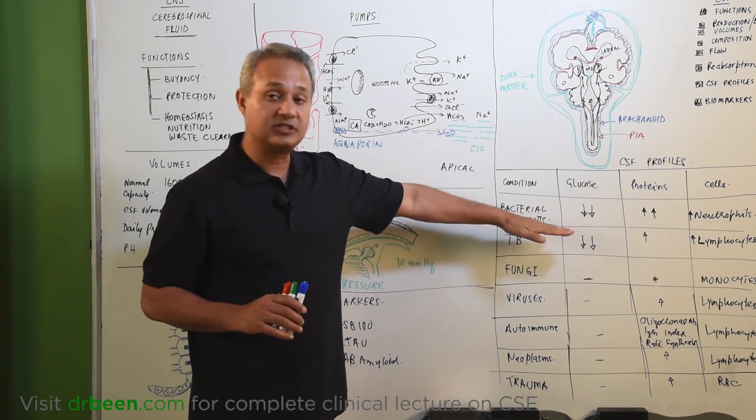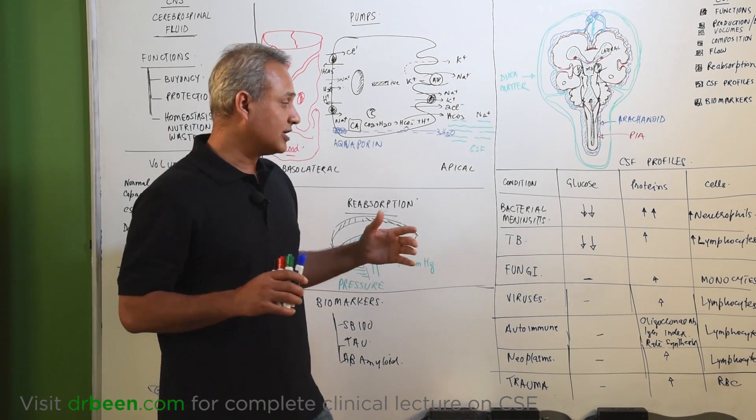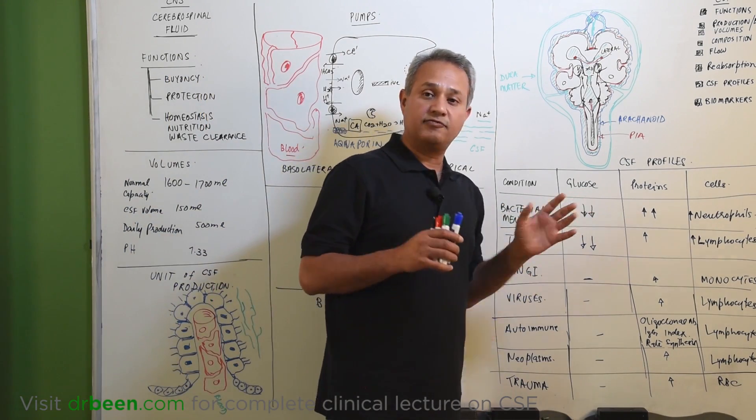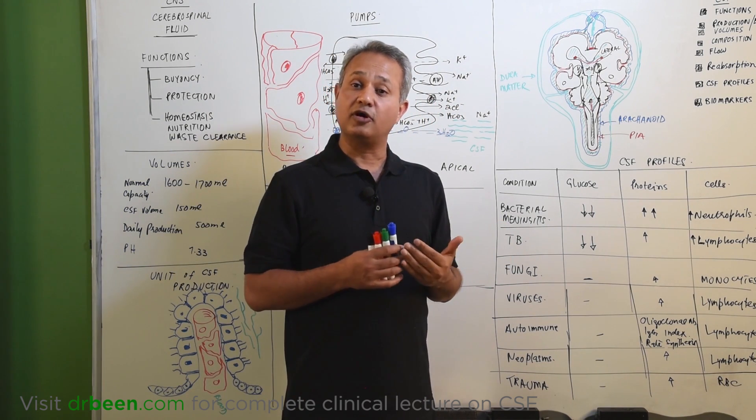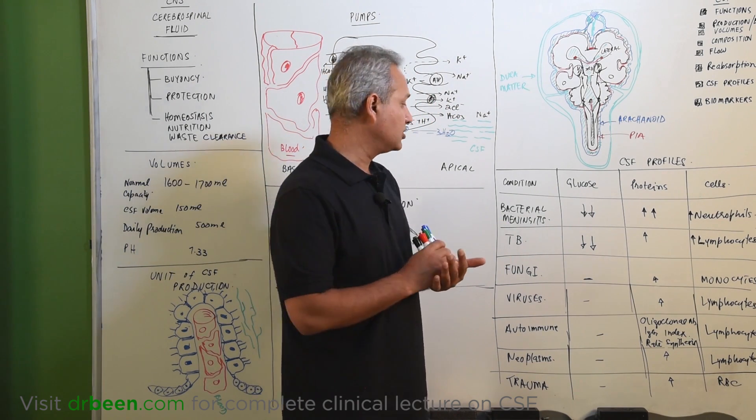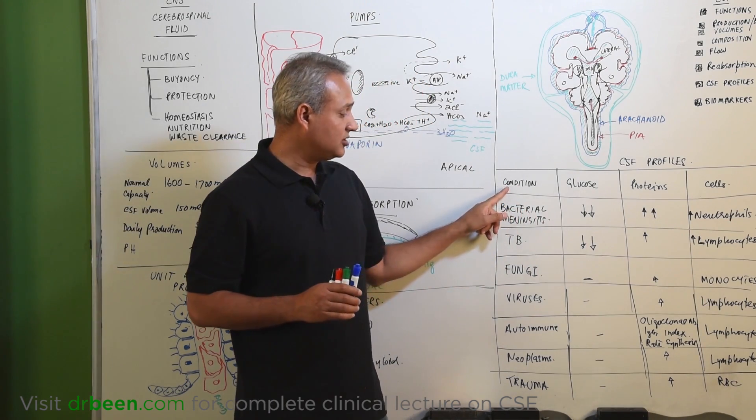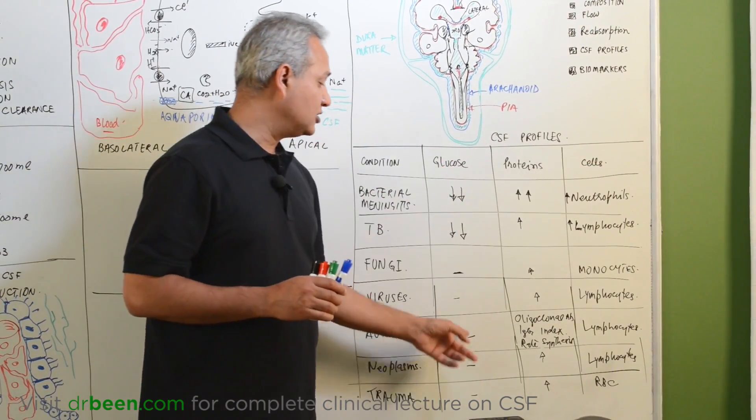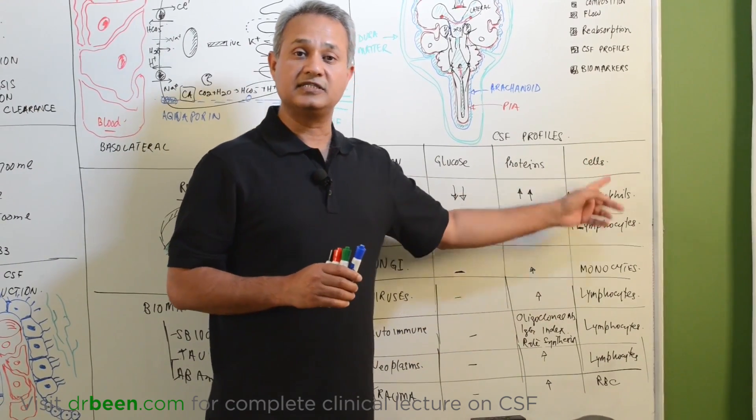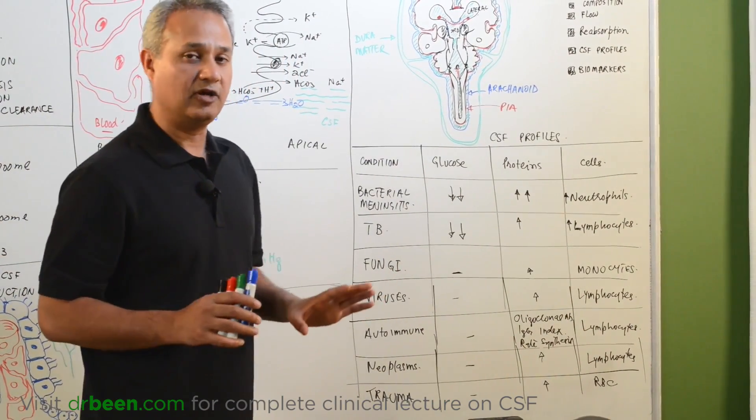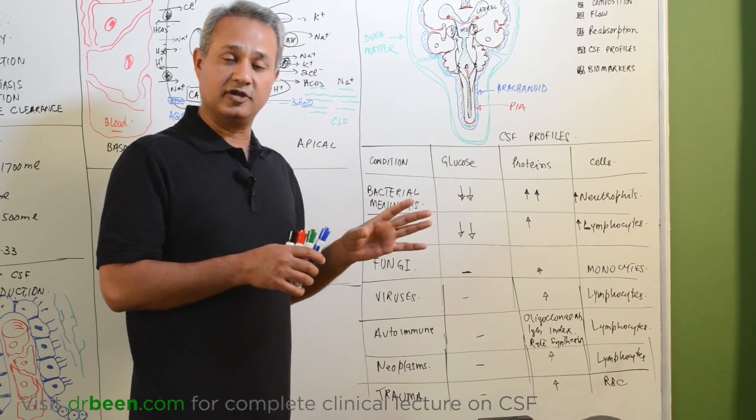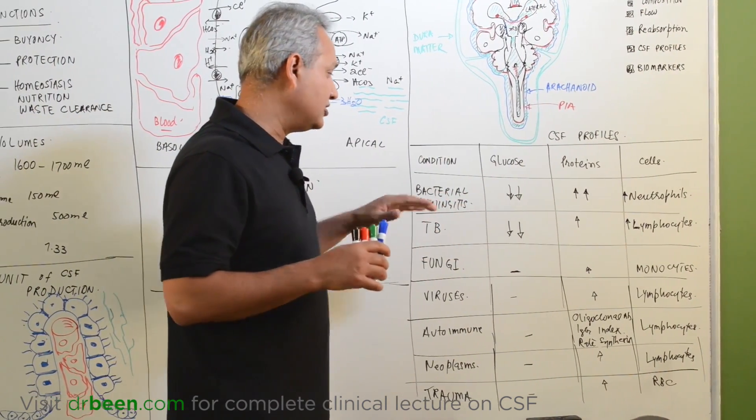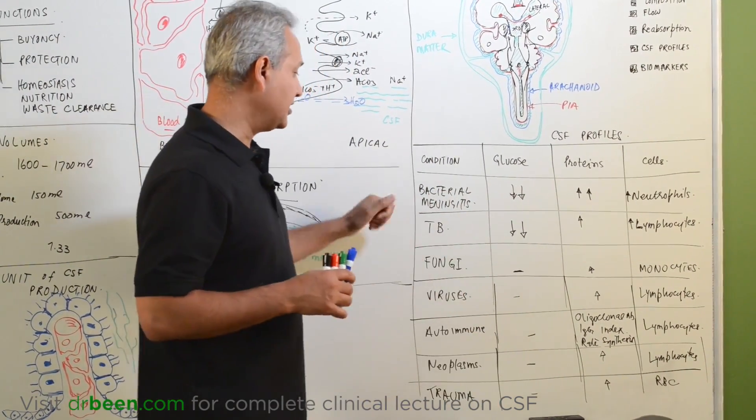Now, let us look at the CSF profiles. What that means is what is the CSF lab results in various pathologies? This is really, really important. Let us look at this condition. Various conditions are lined up here. The situation with the glucose, with the proteins and with the cells. It is actually very logical. If you have done good immunology, if not, please go to YouTube and look at the immunology lectures as well. If you have done immunology, it is actually very logical. Let us look at it.